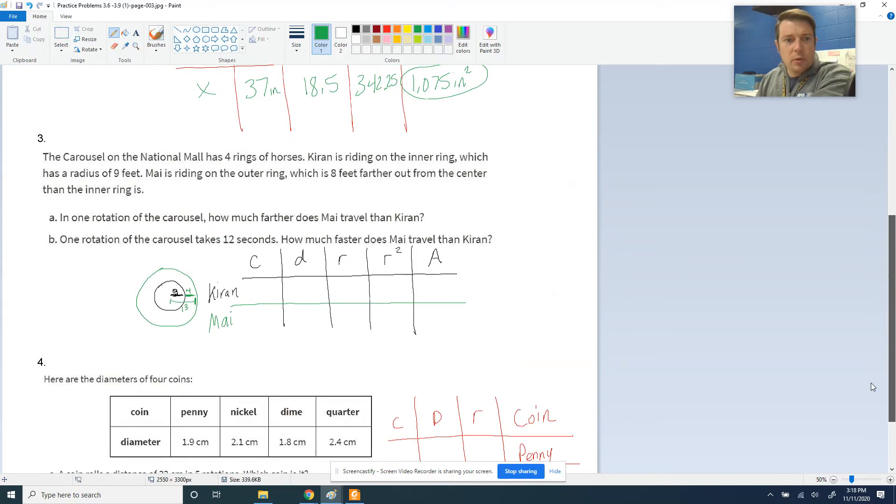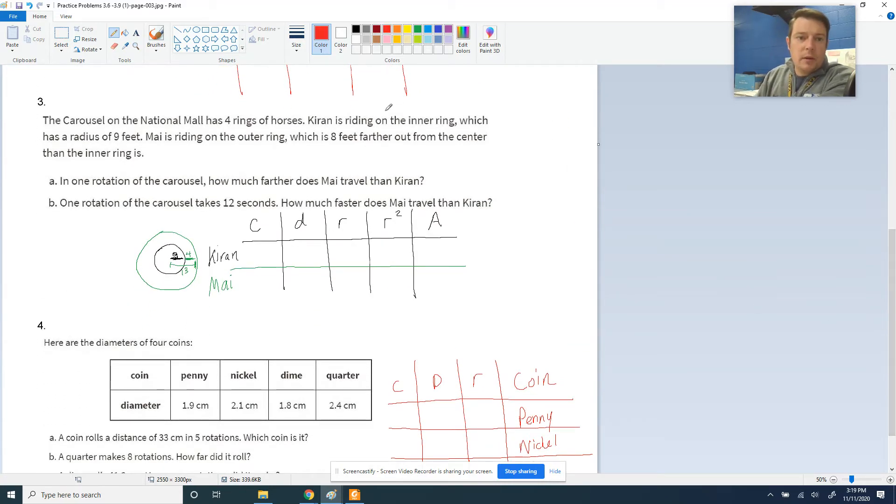Moving on to number three, the carousel problem. A lot of people ask questions about this one. It's pretty tough. We have two people on the carousel: Kieran and May. Kieran is on one of the inner rings that has a 9-foot radius. May is riding on the outer ring, which is 8 feet farther from the center than the inner, and 9 plus 8 means that she has a radius of 17. So May is further out from the center than Kieran is.